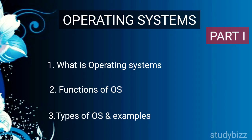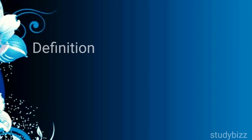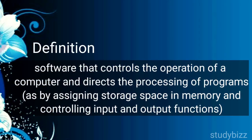Let's have a look at what is the formal definition of operating system. Operating system is nothing but a software that controls the operation of a computer and directs the processing of programs. In other words, we can say it's nothing but a software which is inbuilt in the machine and it acts as an interface between a user and machine.